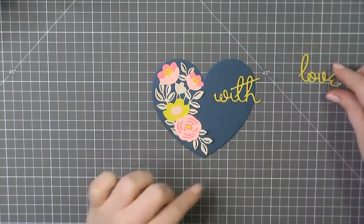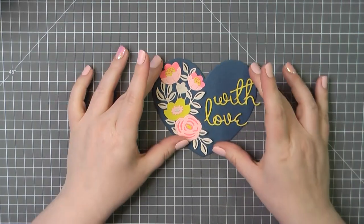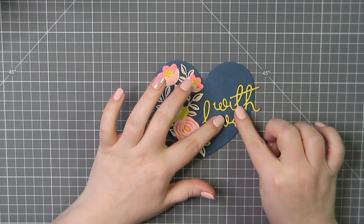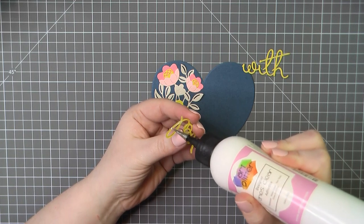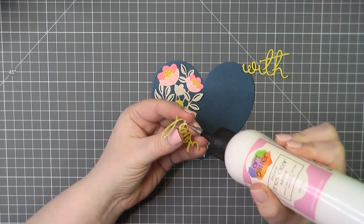And then I'm going to take my sentiment here and lay that out. Make sure it fits nicely. And then again, I will take my art glitter glue and I'll glue both of those into place.